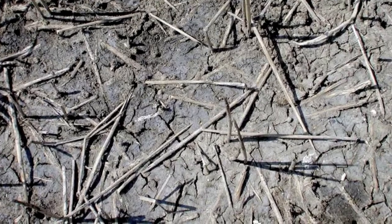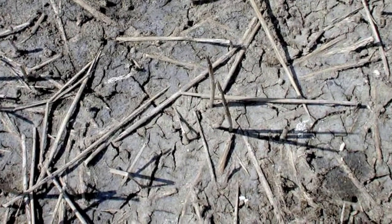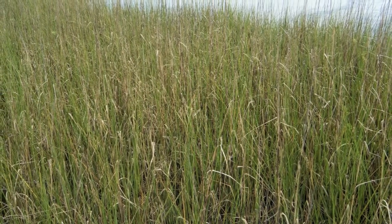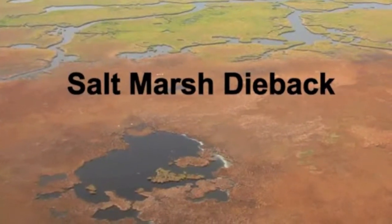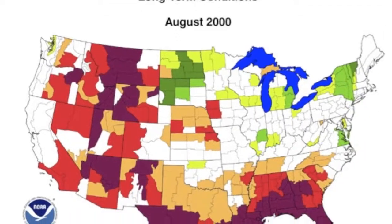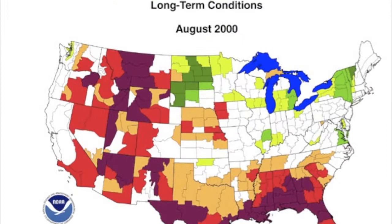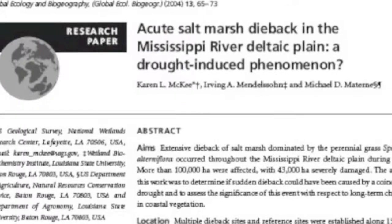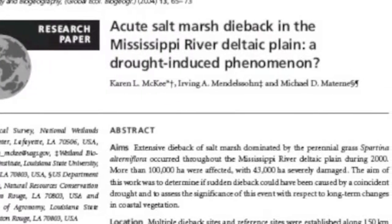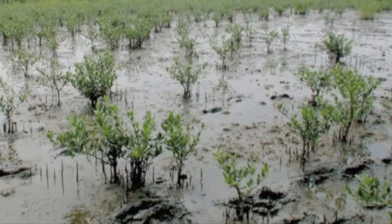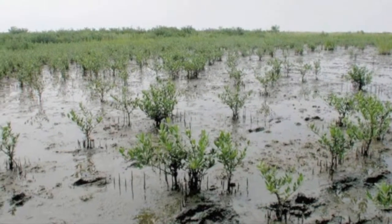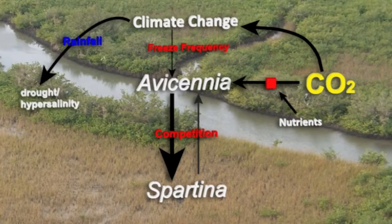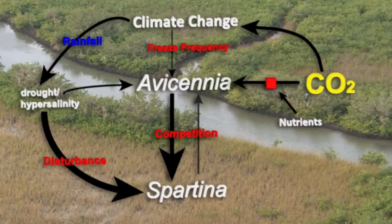With climate change, some regions will experience drier conditions and higher salinities. We can hypothesize that Avicennia is more tolerant of water stress and high salinity than Spartina, based on their natural distributions. Another piece of evidence is the large-scale dieback of salt marsh, which occurred in the Mississippi River Delta at the same time as a 100-year drought. A study of the sudden dieback phenomenon was reported in the journal Global Ecology and Biogeography, and the results strongly indicated that dieback of Spartina was related to this extreme weather event, which left Avicennia untouched.